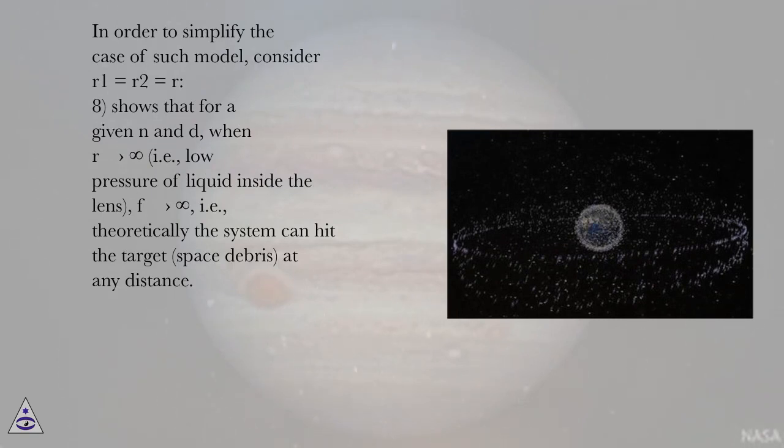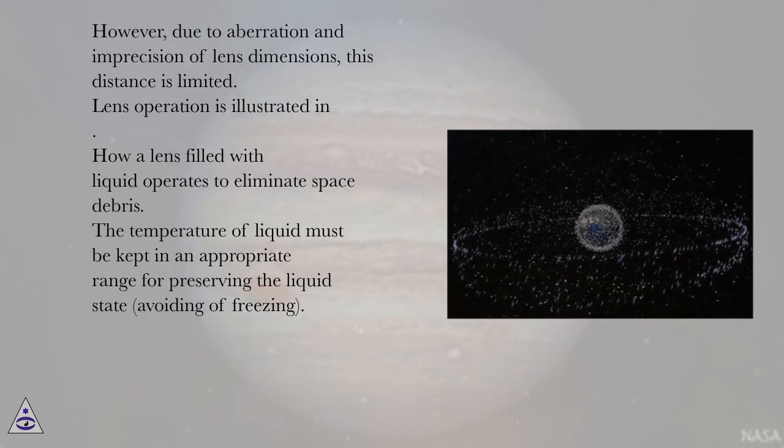This shows that for a given n and d, when R approaches infinity, i.e., low pressure of liquid inside the lens, f approaches infinity, i.e., theoretically the system can hit the target space debris at any distance. However, due to aberration and imprecision of lens dimensions, this distance is limited.